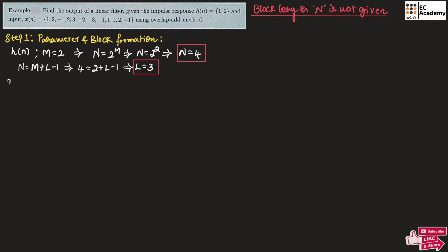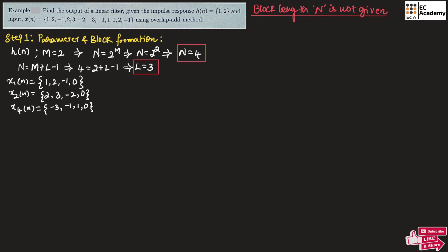We take the first three values 1, 2, −1 and append a zero to make x1(n) of length 4. Similarly, x2(n) takes the next three values 2, 3, −2 with a zero appended; x3(n) takes −3, −1, 1 with a zero appended; and x4(n) takes the last three values 1, 2, −1 with a zero appended, each giving a block of length N = 4.